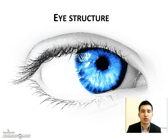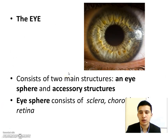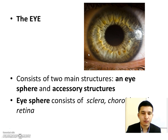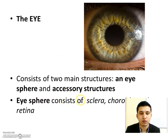Welcome to the Future Biology channel. Today's topic is eye structure. For eye structure, we have two main structures: the eye sphere and accessory structures. The eye sphere is the eye itself, and accessory structures are structures that help the eye maintain its functions. For the eye sphere, we have three parts: the sclera, choroid, and retina.